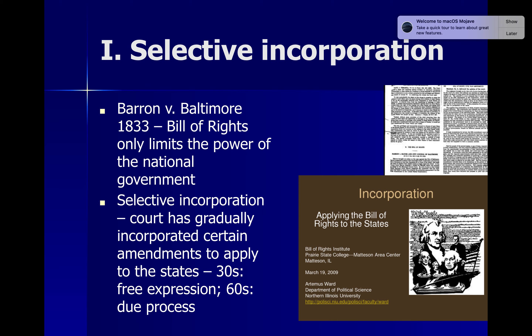So now we're looking at something called selective incorporation, which really we've been looking at the whole time. Barron v. Baltimore is a case — the facts of which I don't really remember — but it's important because the Supreme Court ruled that the Bill of Rights doesn't apply to the states; it only limits the power of the national government. States can decide they want their own bills of rights, but the Bill of Rights of the Constitution does not limit state governments.